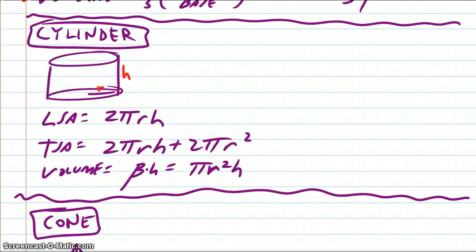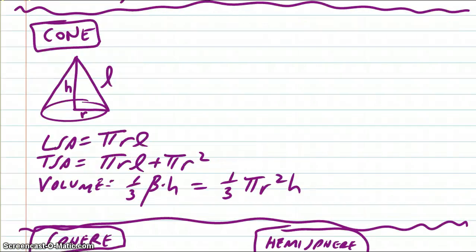Here's the cylinder formulas, R is the radius, H is the height, that fancy B down here means the area of the base. Flash to the cone here, so you have lateral surface area, total surface area, and volume. The L is the slant height. You've got the height and the radius.